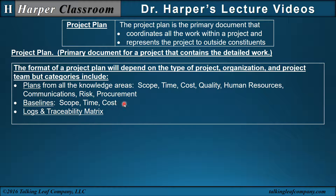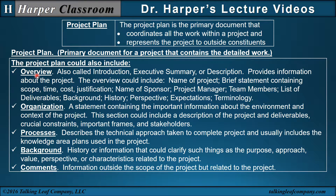The project plan also includes baselines — scope, time, and cost — which can change as it goes through integrated change control. Logs are documented communications, and traceability matrices identify progress, risks, and responses. The project plan could additionally include an overview (also called introduction, executive summary, or description), organization (important information about environment and context such as crucial constraints, political and social frames, and key stakeholders), processes (the technical approach taken to complete the project), background (history important to the project), and comments (information outside scope but related to the project).